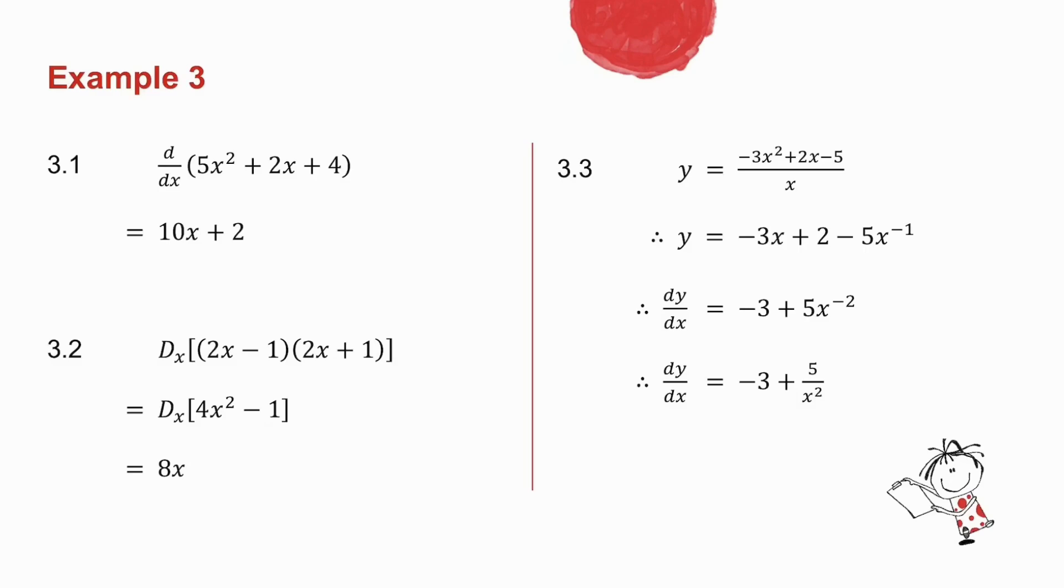In 3.3, I have one term at the bottom, so I divide that x into each of the terms on the top, and I get minus 3x plus 2 minus 5x to the minus 1. Now, this is y equals.